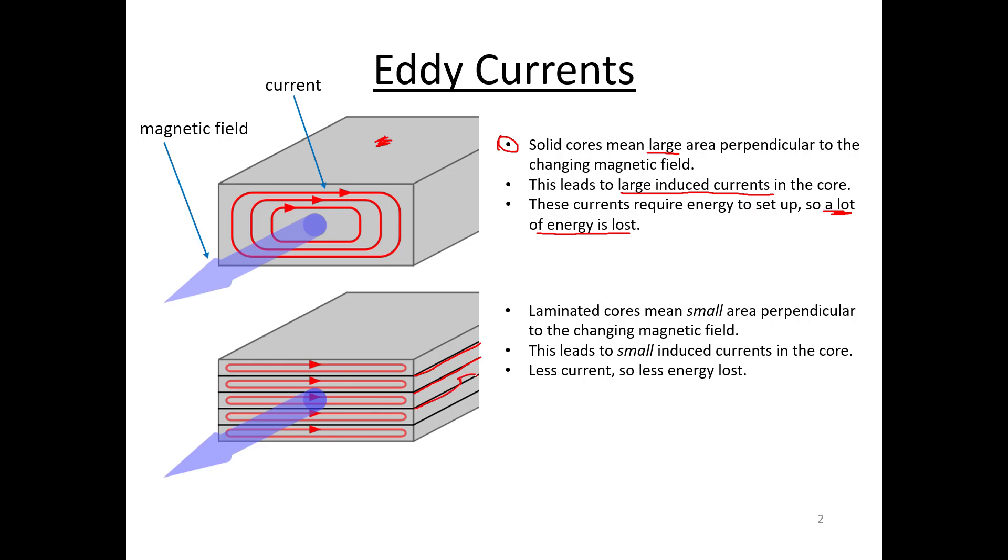You can see my drawing skills need to get a little bit better here, doing it all with a mouse rather than a stylus makes it tough. Again, you've got the same magnetic field, everything like that, but now you've separated all of these little island bits of conductor, this ferromagnetic core material. So you get a bunch of little small areas perpendicular to the changing magnetic field. That leads to relatively small induced currents in the core, and so less current, so less energy is lost.